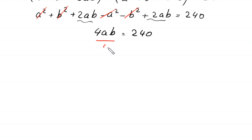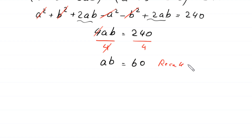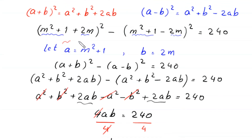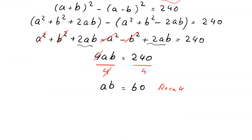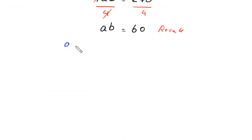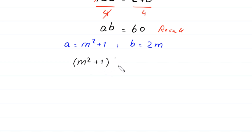Dividing both sides by 4, the 4s cancel and we get A times B equal to 60. Recalling that A = m² + 1 and B = 2m, we substitute: (m² + 1) times 2m is equal to 60.